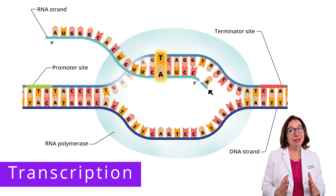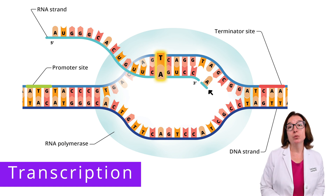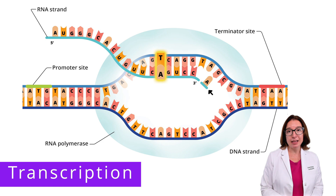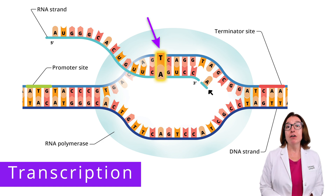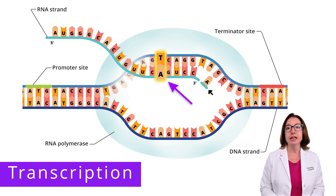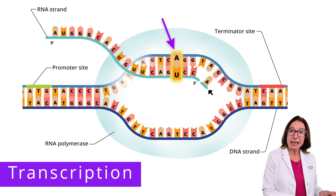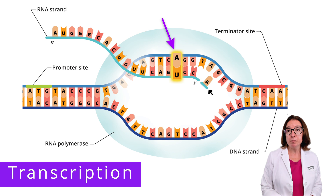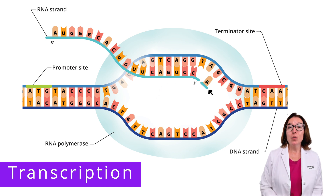Adenine and thymine are also complementary base pairs. However, thymine is replaced with uracil in RNA. So if a DNA nucleotide contains thymine, then RNA polymerase will synthesize a nucleotide that contains adenine and add that on to the mRNA strand. However, if the DNA nucleotide contains adenine, then RNA polymerase will synthesize a nucleotide that contains uracil and add that on to the mRNA strand.